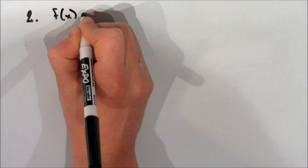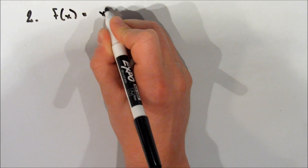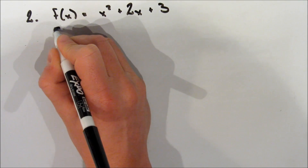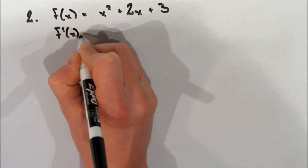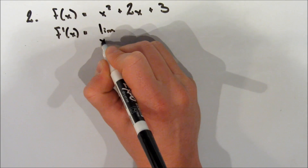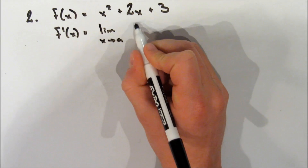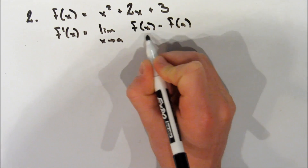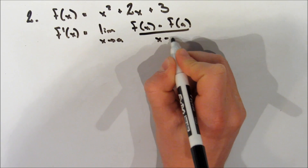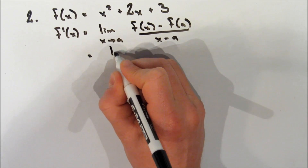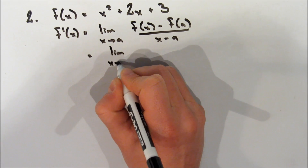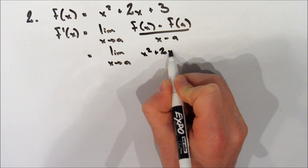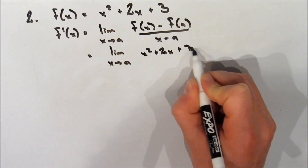Okay, so here's a bit of a harder example. f(x) is equal to x squared plus 2x plus 3. Now, to take the derivative of this, we're going to say f'(x) is equal to the limit as x approaches a of f(x) minus f(a) all over x minus a. On the next line, we write out the limit again as x approaches a, and we write out our function f(x): x squared plus 2x plus 3.